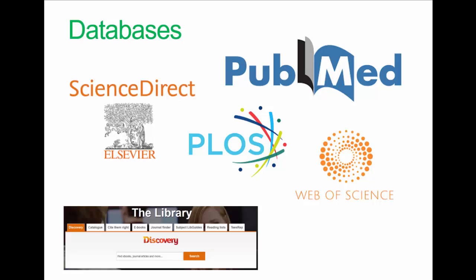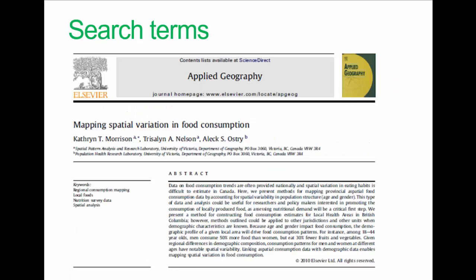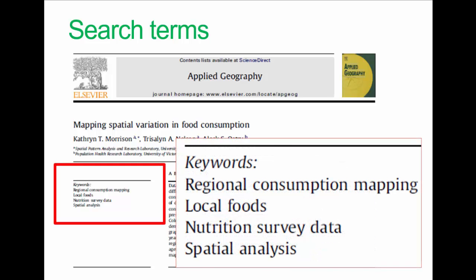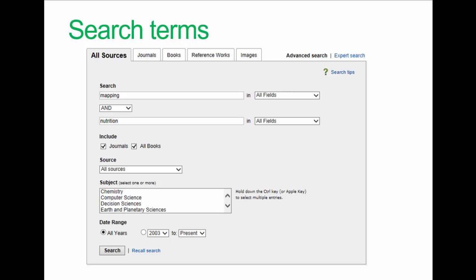These are some fairly common databases which you will be mostly familiar with, and there are links in the notes. It's probably a good idea to think about initial search terms — you probably have an idea to start with. When you find some interesting papers, have a look at the keywords, as these can be useful in developing your own search terms further. I have some general advice on searching which I'm sure many of you are familiar with.